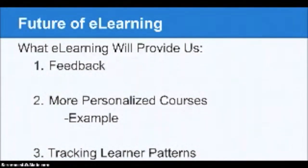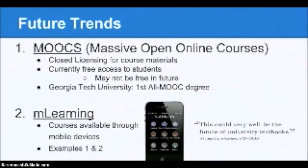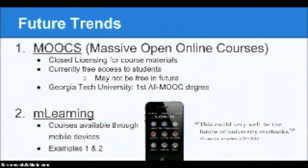Now we're going to talk about some trends that we could expect to see in the future. First, MOOCs, or Massive Open Online Courses, which currently have closed licensing for course materials. Currently this is free for students, but it may not be in the future. Georgia Tech recently unveiled the first all-MOOC computer science degree, which is roughly $7,000 — a lot cheaper than what we're paying.